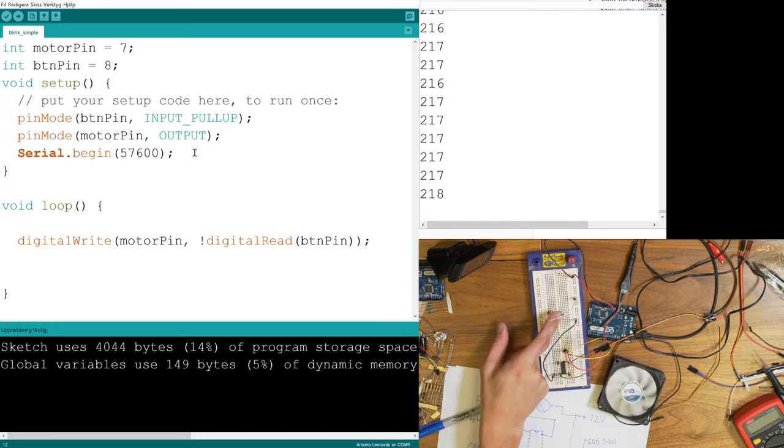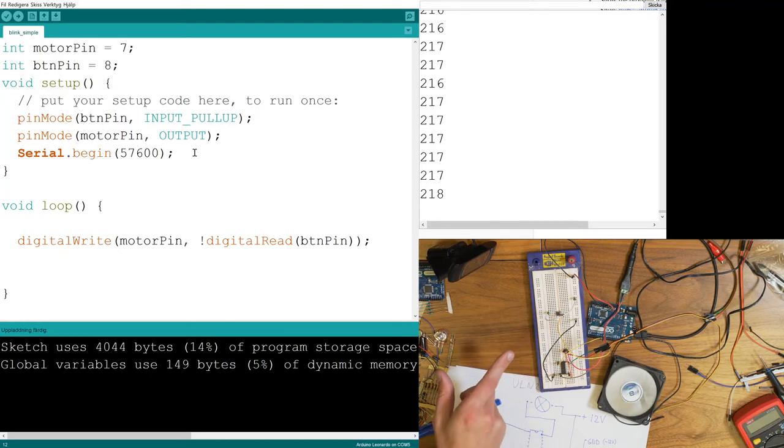So, if I press the button now, you will see that the motor starts. So, basically, we have an Arduino code that can control a 12 volt thing. And that is the main goal of this exercise.